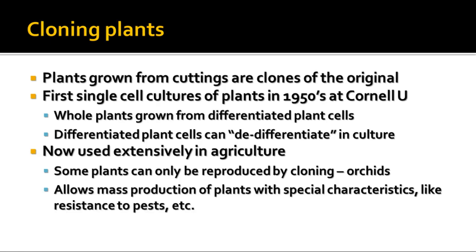Cloning plants was first done in the 1950s at Cornell University in New York — cloning plants from single cells. It's pretty easy to take cuttings of plants and grow new plants from that, and people have been doing that for thousands of years. But back in the 1950s they were trying to clone plants from single cells. What they found was that when they grow plant cells in culture, the differentiated plant cells can de-differentiate and then be stimulated to produce a brand new whole plant. This process is used extensively in agriculture nowadays.